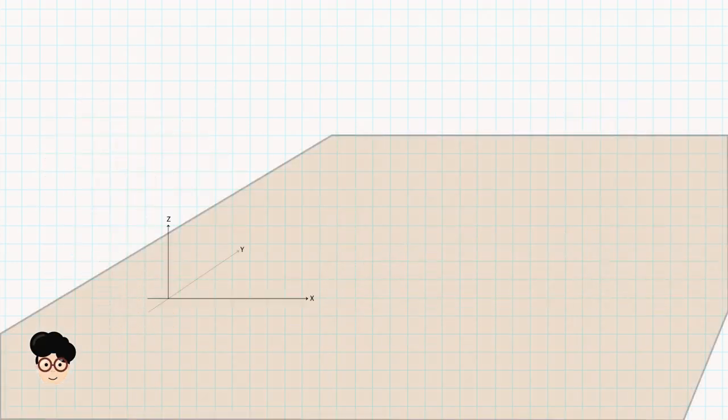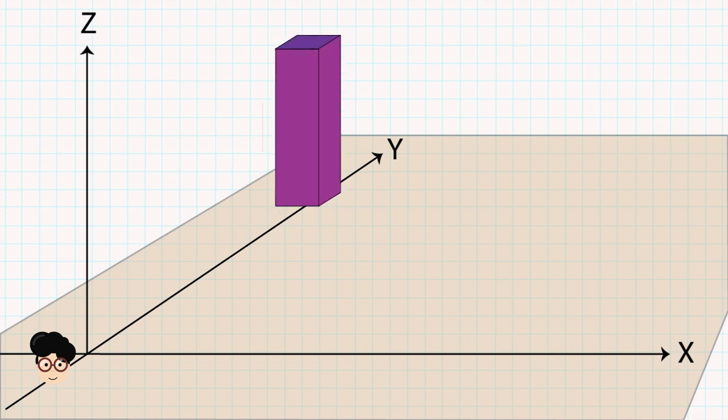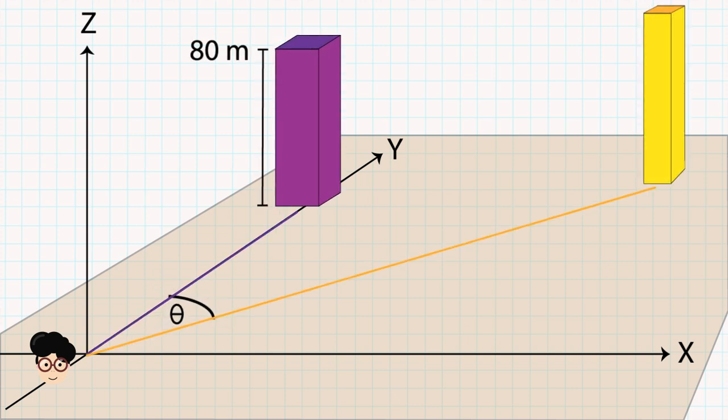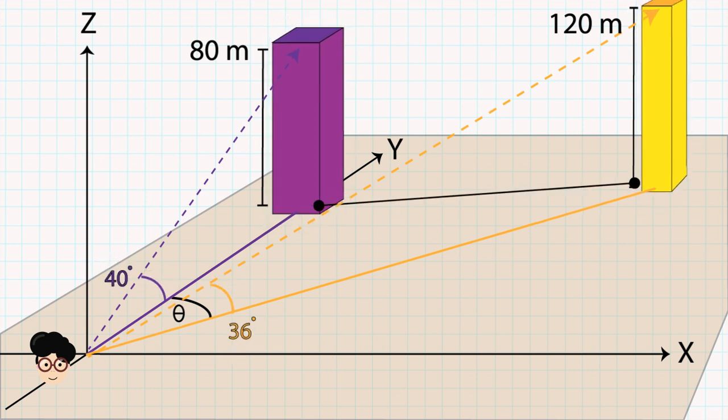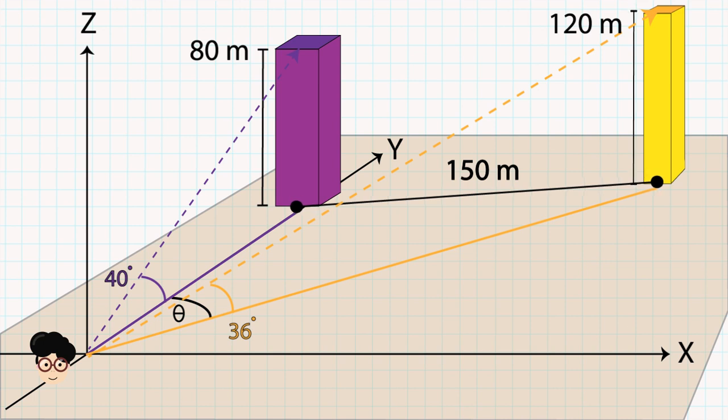An observer observes two towers, one due north of height 80 meters and the other on a bearing of theta less than 90 degrees of height 120 meters. The angles of elevation of the two towers are 40 and 36 degrees respectively. The towers are 150 meters apart on a horizontal plane.